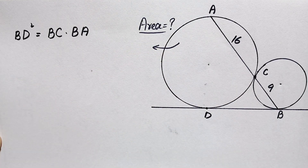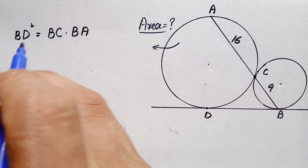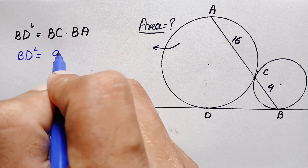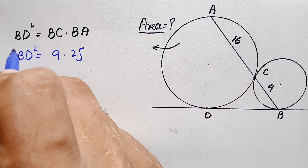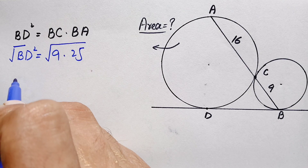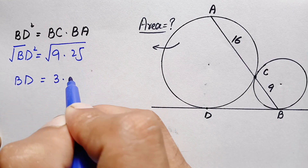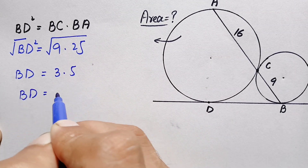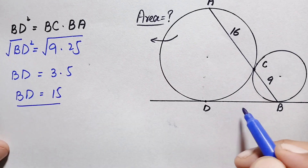We substitute the value of BC which is 9 units and the value of BA which is 16 units. So BD² = 9 × 25, which is 9 × 25. Taking square root on both sides, BD = √9 × √25 = 3 × 5 = 15. So the length of BD is 15 units.